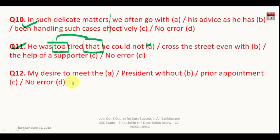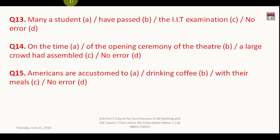Question number twelve: 'My desire to meet the president without prior appointment.' Here you are making a statement about something you want to do. You must say 'My desire is to meet' — you need 'is' to complete the sentence. For example: 'My desire is to meet,' 'My desire is to go,' 'My desire is to teach.' The corrected sentence is: 'My desire is to meet the president without prior appointment.' The answer is A.